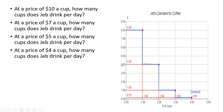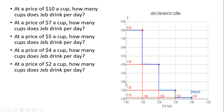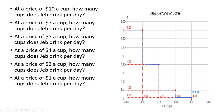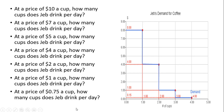At a price of $4 a cup, Jeb will buy two cups of coffee. He'll buy the first cup because he values it more than the price, and he'll buy the second cup because he values it at $4 — so he'd be willing to pay $4 for it. He's not going to buy the third cup at $4, since he values it at only $1. At a price of $2, Jeb will again buy two cups. At a price of $1 a cup, Jeb will buy three cups. At $0.75 a cup, still three cups.